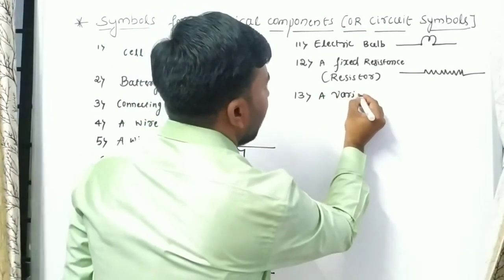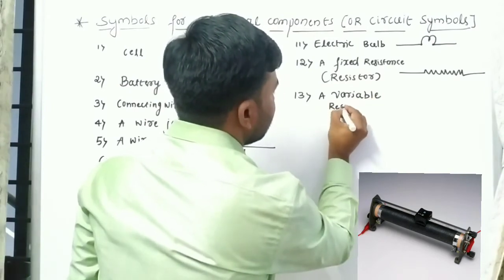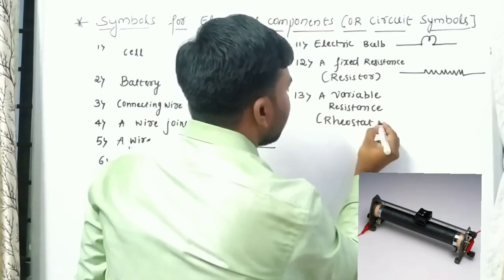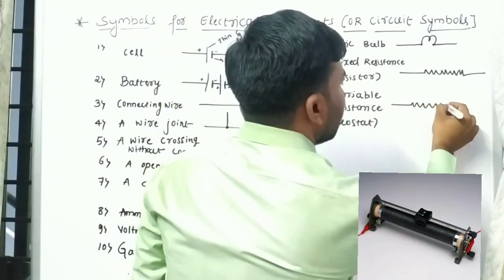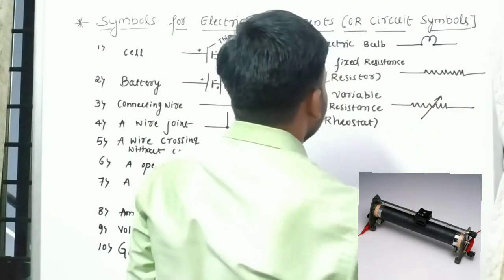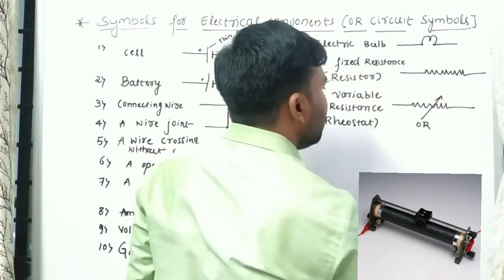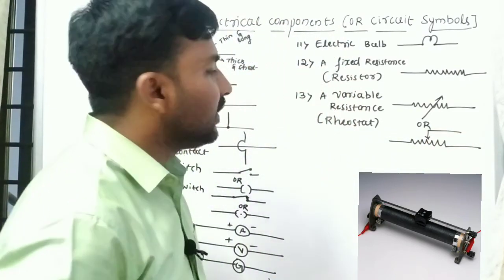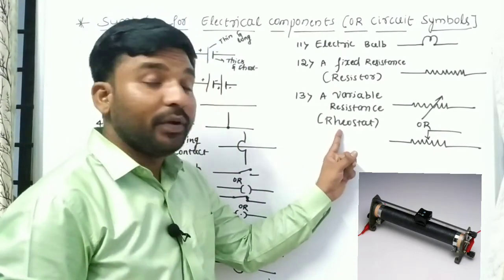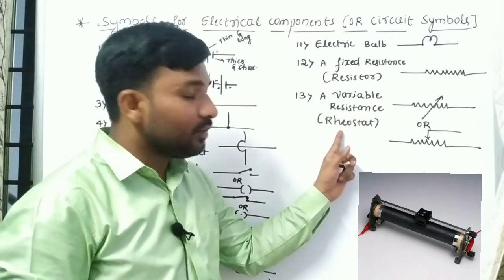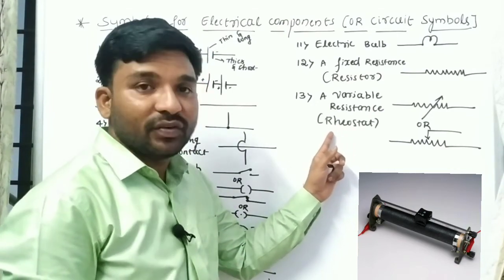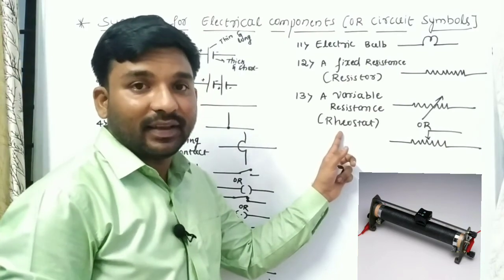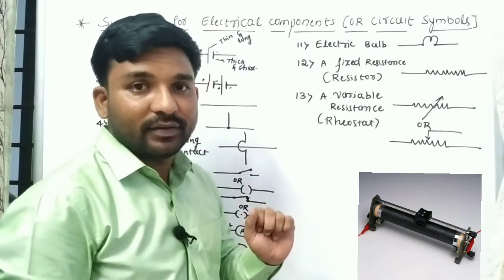Next is a variable resistance, also called a rheostat. The symbol for variable resistance is a rectangle with an arrow through it, or an alternative symbol also exists. Regarding the rheostat: without changing the voltage, we can change the current in the circuit — that work is done by the rheostat, which we will study in detail later.